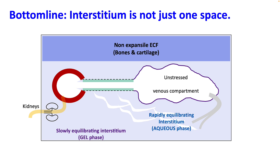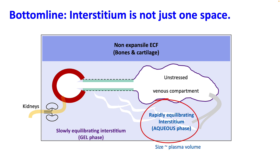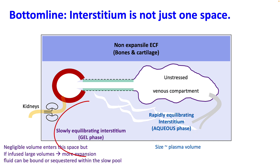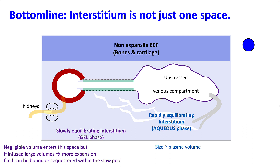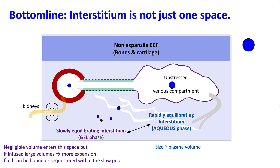So interstitium is not just one space — it is made up of multiple subspaces. There is a rapidly equilibrating interstitium, the aqueous phase, with a size similar to your plasma volume. There is a slowly equilibrating interstitium, the gel phase, which accumulates fluid when large volumes are infused or during inflammation. There is also a non-expansile ECF present in bones and cartilage. When you give fluid, it first redistributes between stressed and unstressed compartments; some leaks into the rapidly equilibrating aqueous phase, is returned by lymphatics, and then slowly equilibrates with the gel phase.